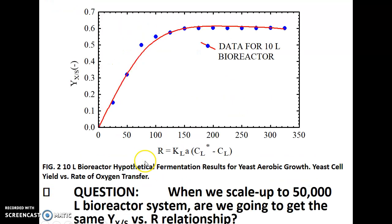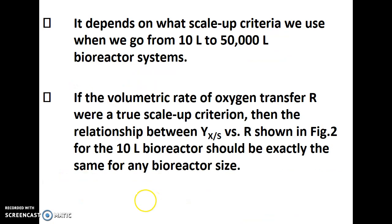Using the 10-litre laboratory scale bioreactor, we run a number of experiments and obtain hypothetical data. When we plot a graph between yield and R, we get a linear plot which becomes constant after some point. The question is: when we scale up to a 50,000-litre bioreactor system, will we get the same yield versus R relationship? This depends on what scale-up criteria we use. If the volumetric rate of oxygen transfer R were a true scale-up criterion, then the Y versus R relationship for the 10-litre bioreactor should be exactly the same for any bioreactor size.